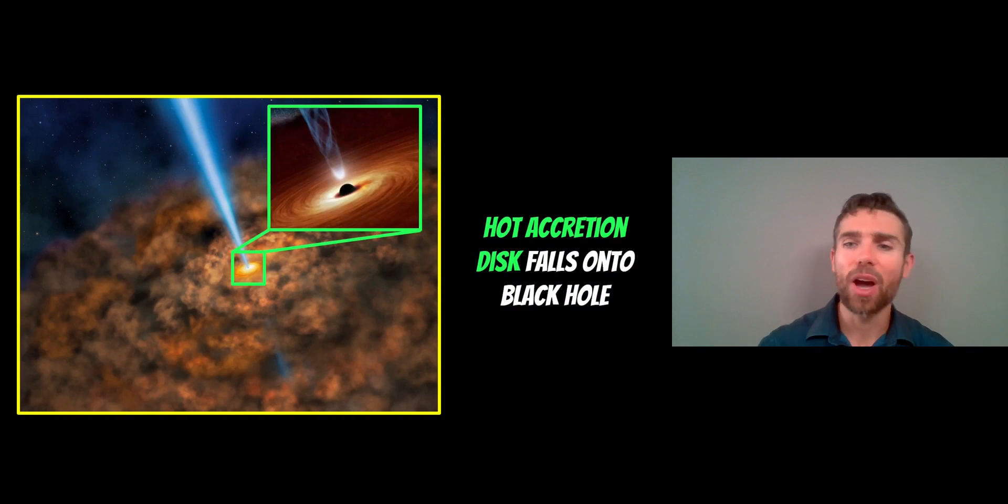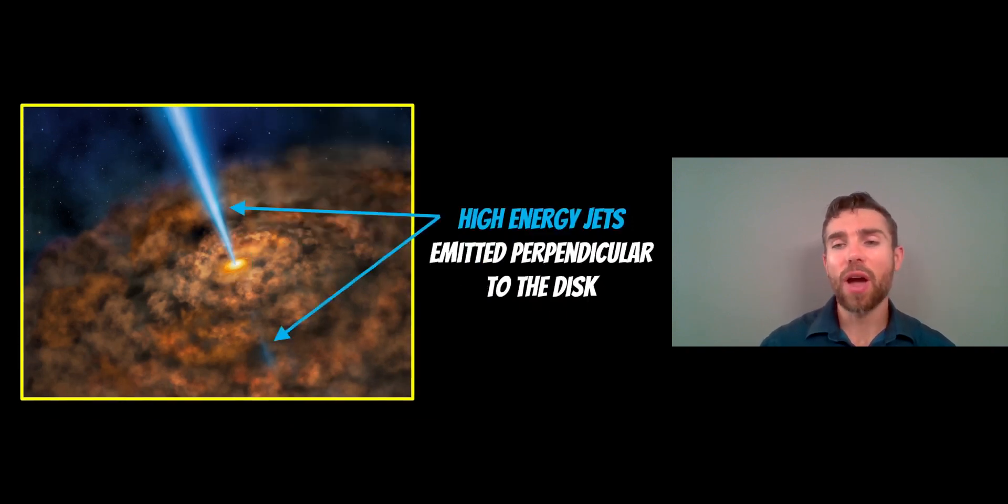They have a hot accretion disk orbiting the black hole. Some of it's falling onto the black hole, which is very luminous and we can observe. They also have very high energy jets that are emitted perpendicular to the disk. This is a defining feature of blazars—these very high energy jets coming perpendicular to the disk that's orbiting the black hole in the central part of these galaxies.